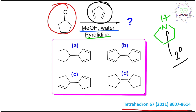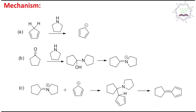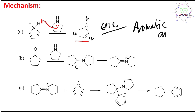Now what can a base do? A base will react with an acidic proton, and in this case the carbon-hydrogen bond is significantly acidic because the produced carbanion or conjugate base is resonance stabilized or aromatic. The lone pair of nitrogen will abstract this proton and ultimately produce this carbanion, which is aromatic because it has 6 pi electrons — cyclic, planar, conjugated. So this is actually an aromatic anion.